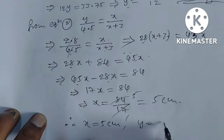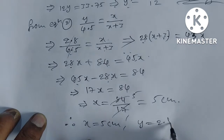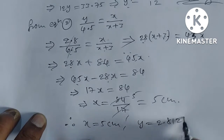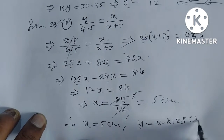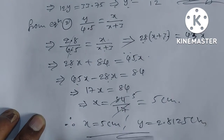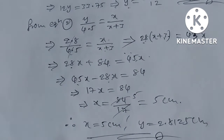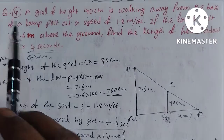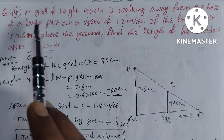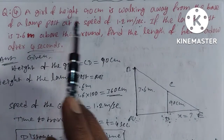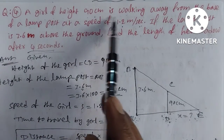Therefore, X is equal to 5 centimeters and Y is equal to 2.8125 centimeters. This is the answer. Now, question number 4: A girl of height 90 centimeters is walking away from the base of a lamp post at a speed of 1.2 meters per second.